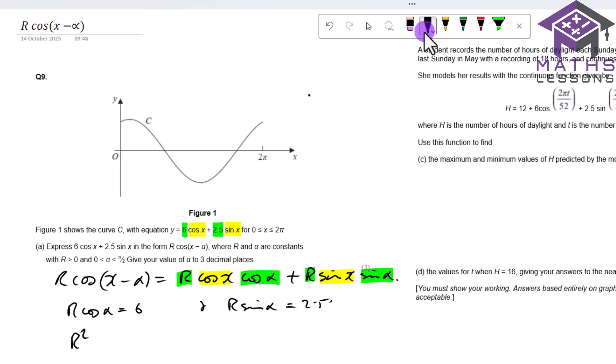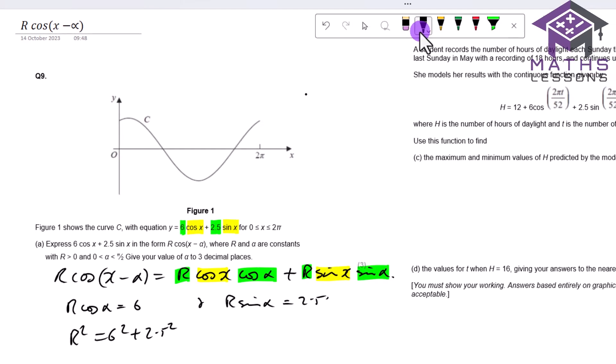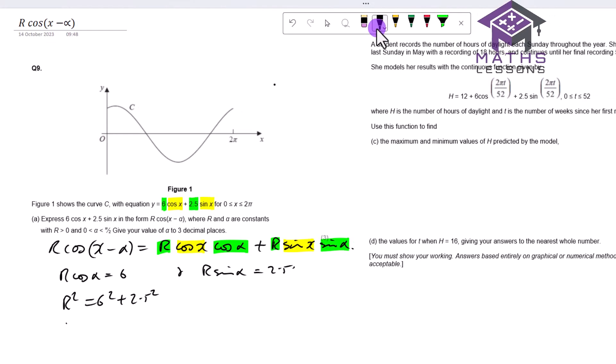r cos alpha equals 6 and we know that r sin alpha equals 2.5. Now if you square these and add these together, the cos squared plus sin squared equals 1, so it cancels out. So we always end up with r squared equals 6 squared plus 2.5 squared. You can learn that off by heart. So therefore r squared equals 36 plus 6.25, that's going to give me 42.25 and r comes out as 6.5 when you square root that.